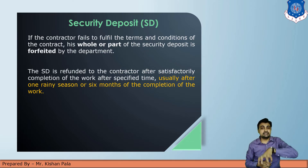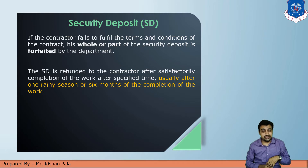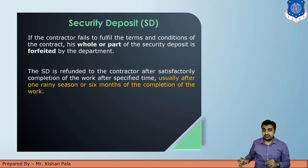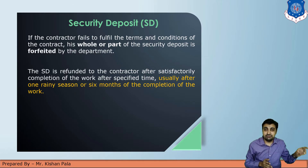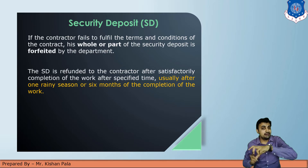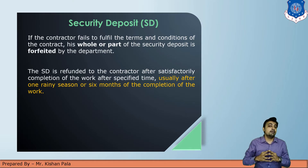It is the client's decision how much security deposit will be forfeited — it may be part or the total amount. If the contractor completes the work with the correct specifications, drawings, and within the time duration, the security deposit is refunded after satisfactory completion, usually after one rainy season or six months of completion.